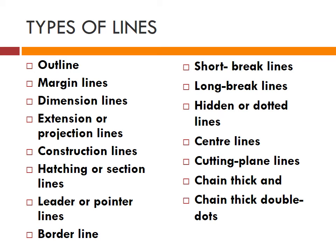Leader or pointer line is drawn to connect a note with a feature to which it applies — it is continuous and thick. Border line: a perfectly rectangular working space is determined by drawing border lines; they are continuous thin lines. Short break lines are continuous thin and wavy, drawn freehand to show a short break. Long break lines are thin ruled lines with short zig-zags within them, drawn to show long breaks. Hidden or dotted lines show interior or hidden edges and surfaces; they are of medium thickness and consist of small dashes.